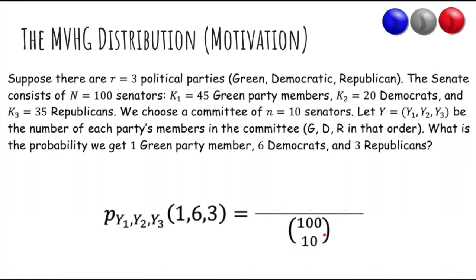Okay, how many ways are there to choose each party's members? Well, there's 45 Green Party members and you need to choose one. Then there's 20 Democrats, you need to choose six. And there's 35 Republicans, choose three. So that's the total probability of getting this vector of counts in the committee.